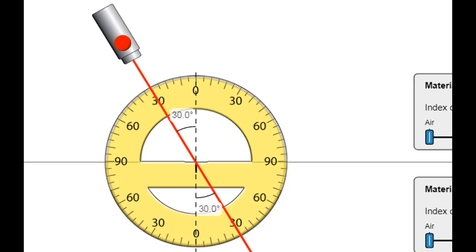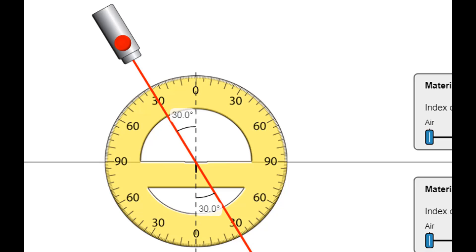With n2 = 1, the top and bottom media are both air, so there is no real boundary between them. Unsurprisingly, the angle of incidence and angle of refraction are the same — there is no refraction, no bending. The light is just going straight through.